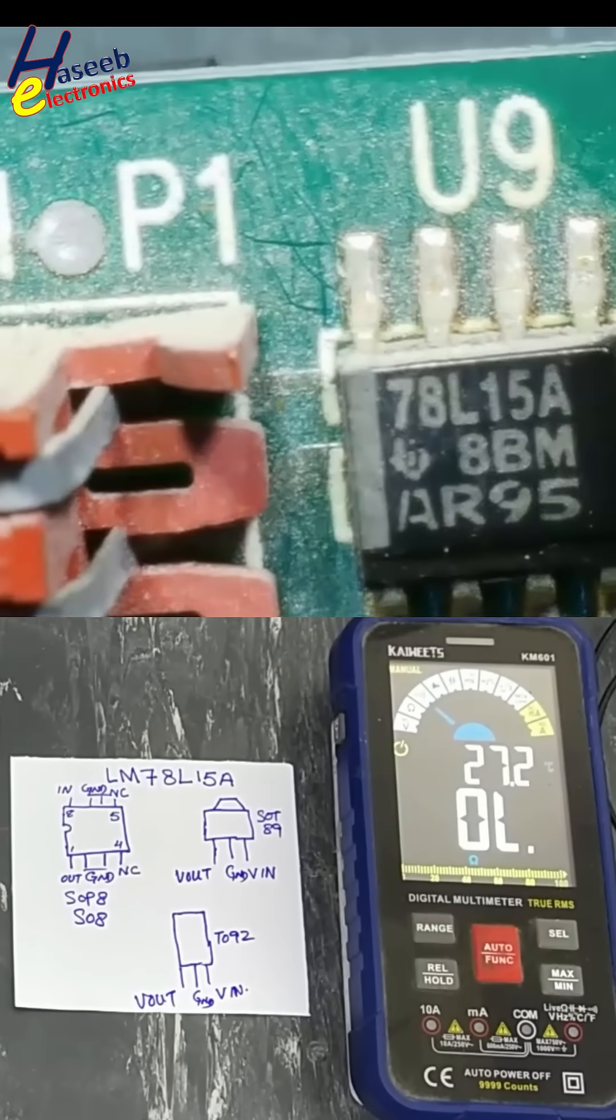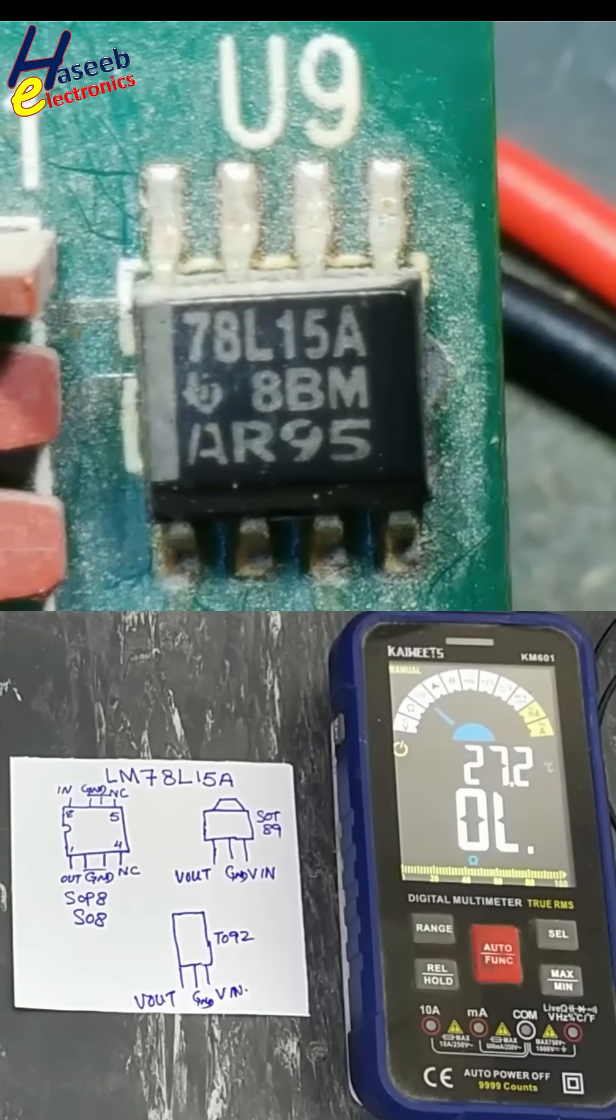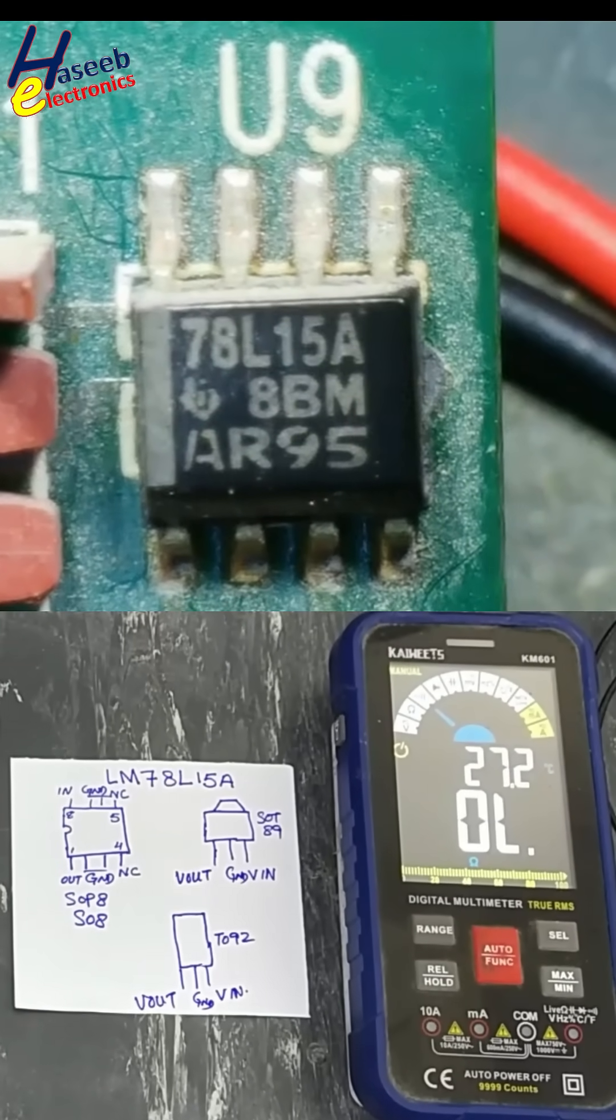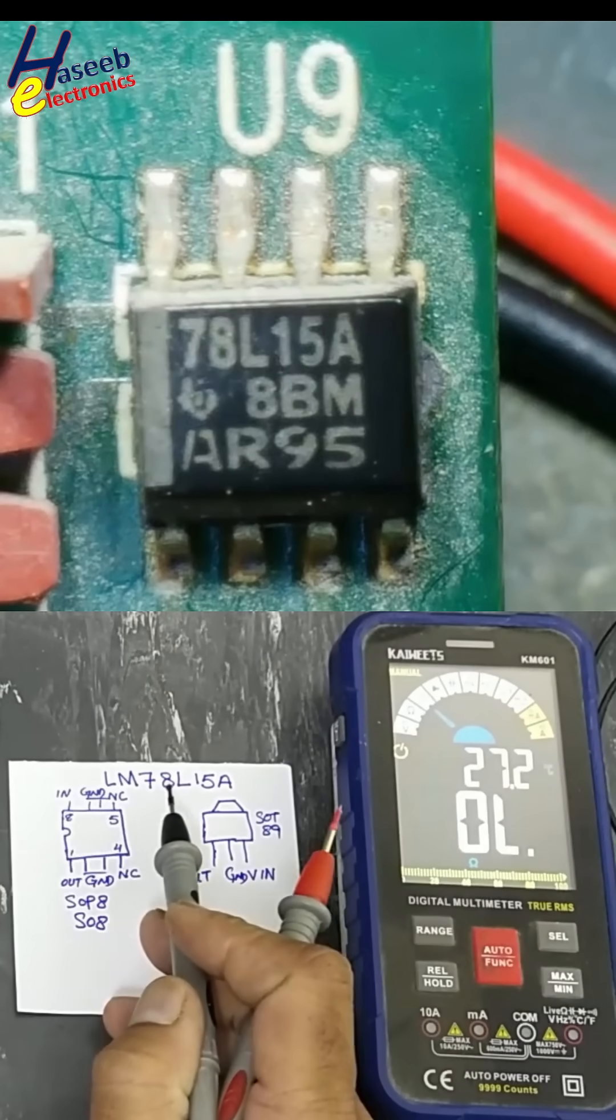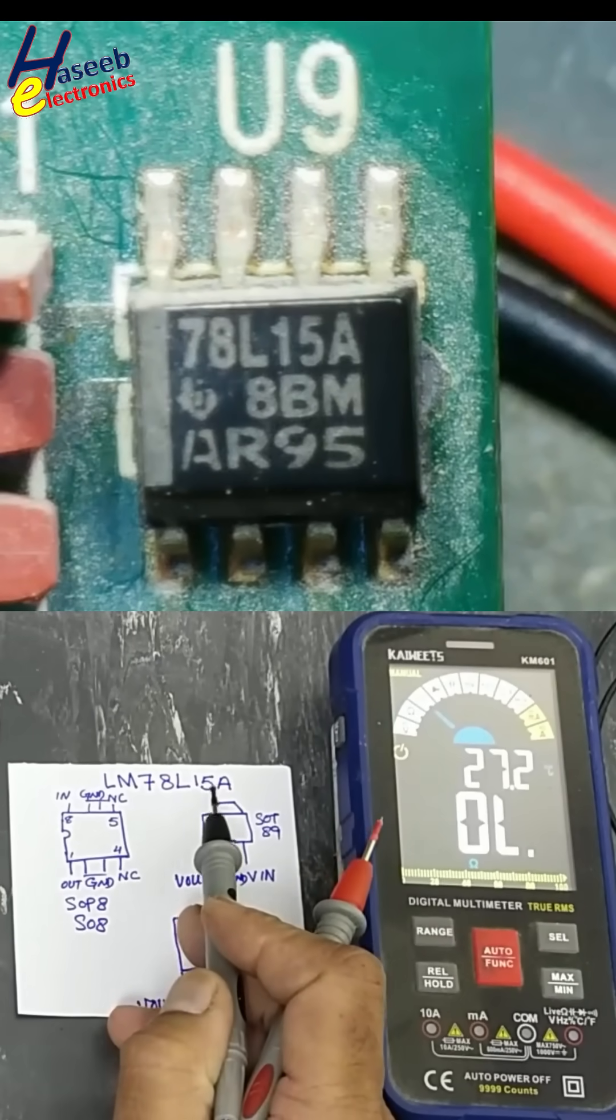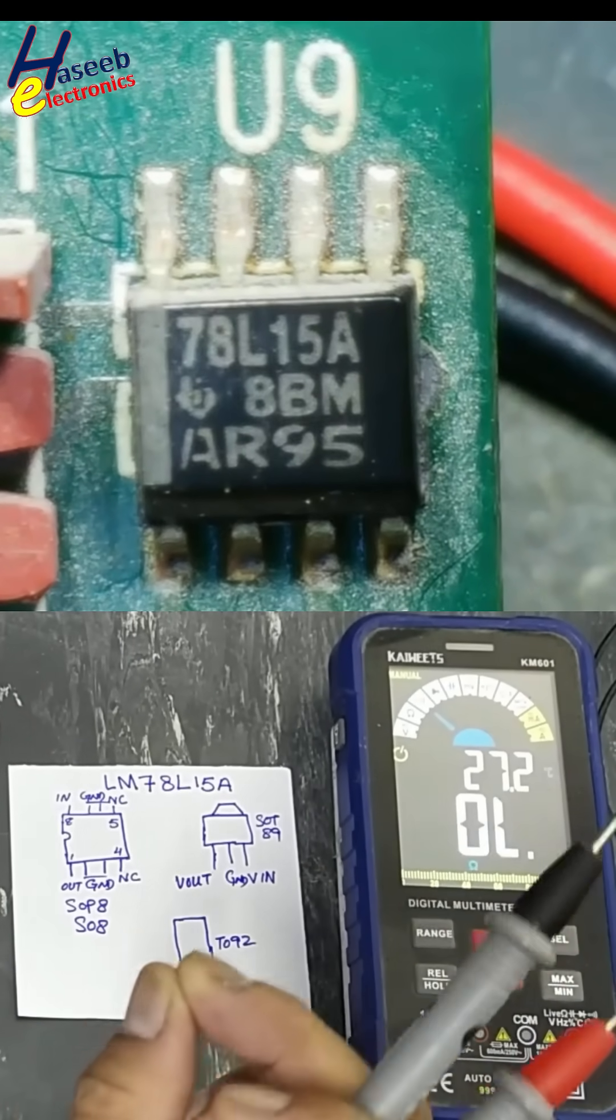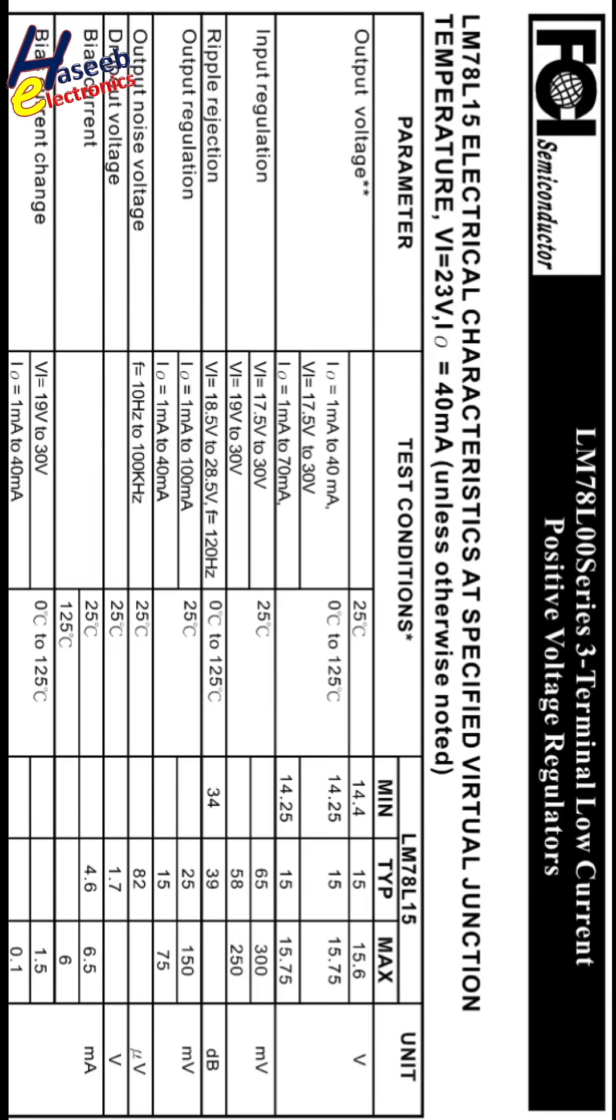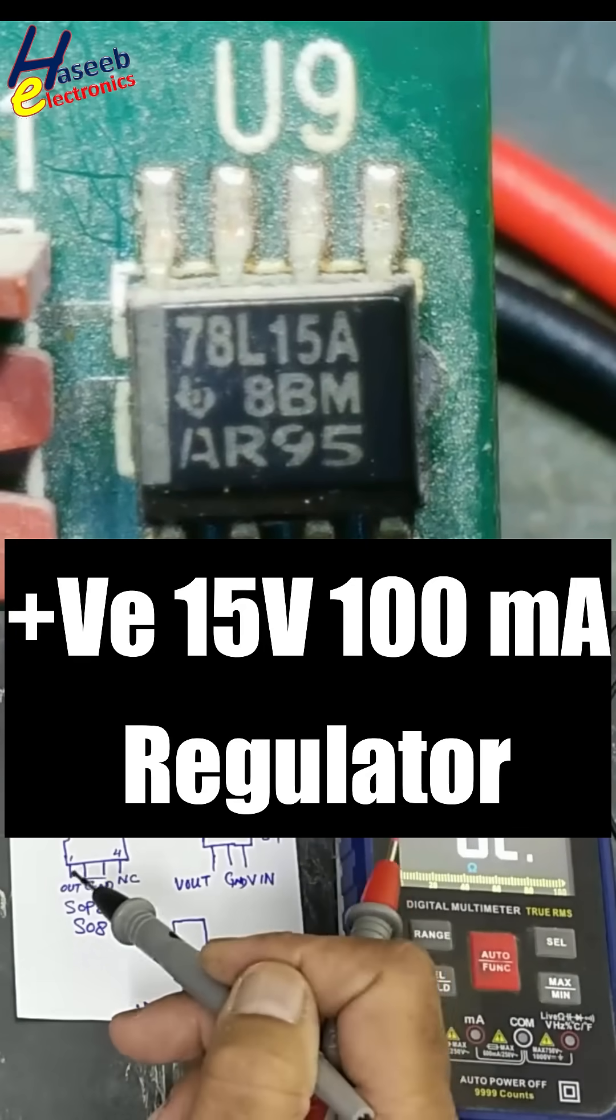This 8-pin SMD IC 78L15A, its part number is LM78L15A, is a positive fixed voltage 100mA voltage regulator.